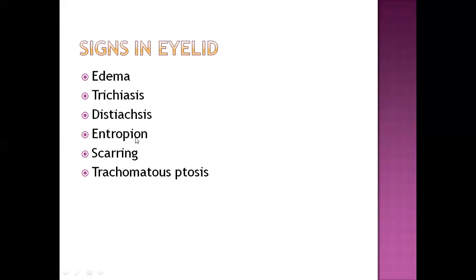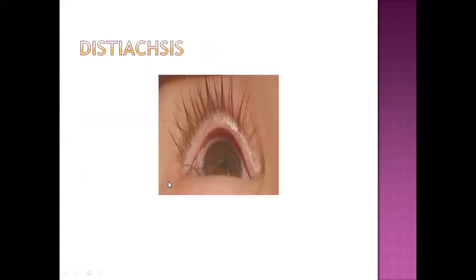Signs in the eyelid include edema, trichiasis, dyskyiasis, and entropion. In trichiasis, the eyelid changes its normal angle. In dyskyiasis, it moves slightly inward. In entropion, the eyelashes of the lower eyelid turn towards the inner part of the eye — which should turn towards the outer part — causing scarring. At the end stage, trachomatous ptosis formation occurs.